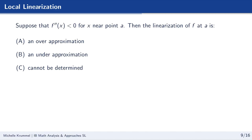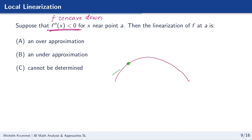Suppose f double prime of x is less than 0. Immediately: f is concave down. For an x value near point a, the linearization of f at a gives an over-approximation — because when f is concave down, the tangent line is above the curve, giving an estimate that is too high.